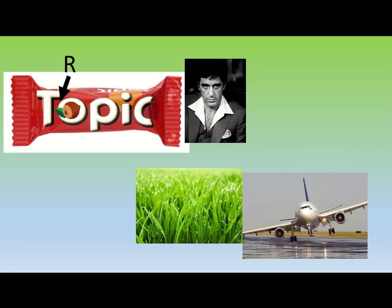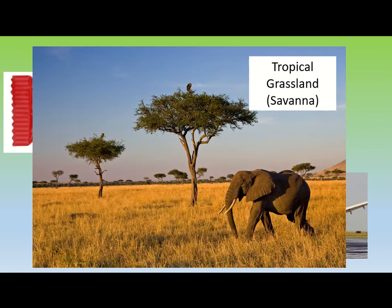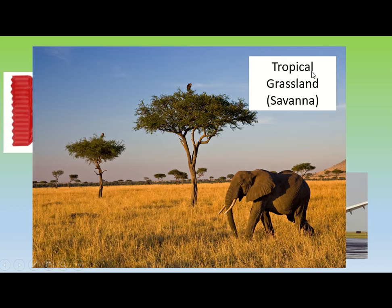This one is tropical grassland — better known as savannah, just like you'd find in The Lion King. These are typically grasslands dominated by grass, with a few thorny, hardy trees. They're found between the tropics; anything that says 'tropical' occurs between the Tropic of Cancer and the Tropic of Capricorn, just north and south of the equator.